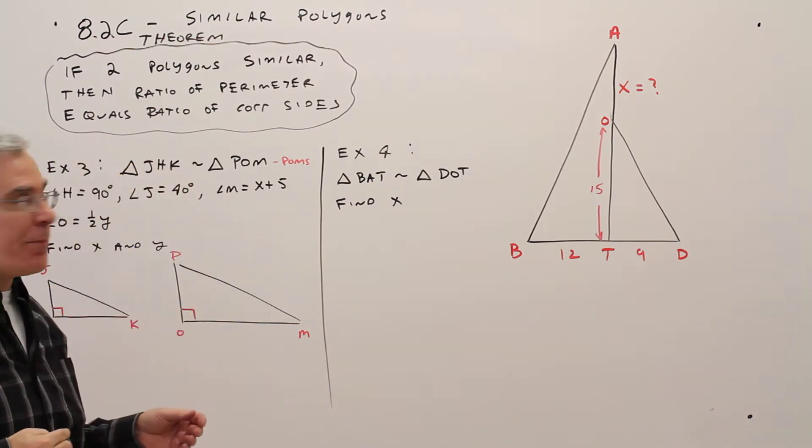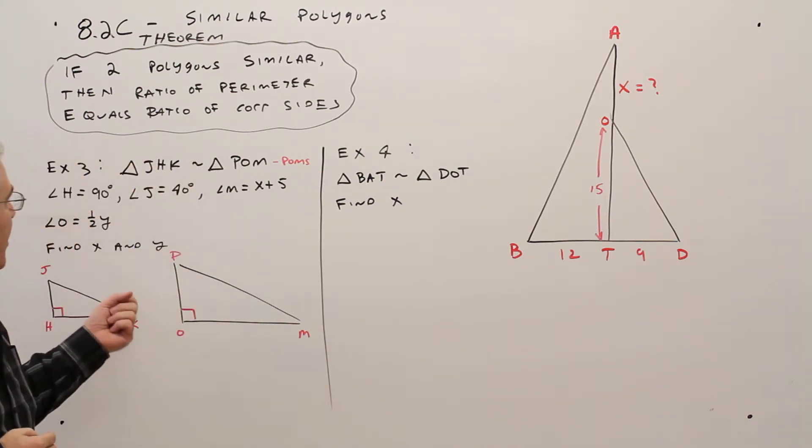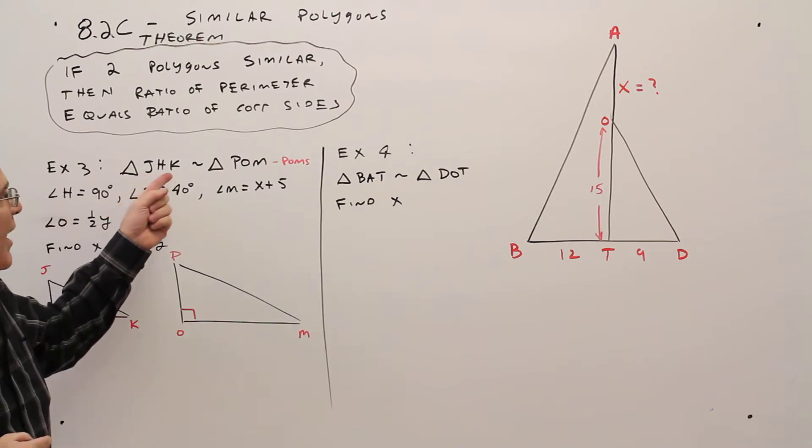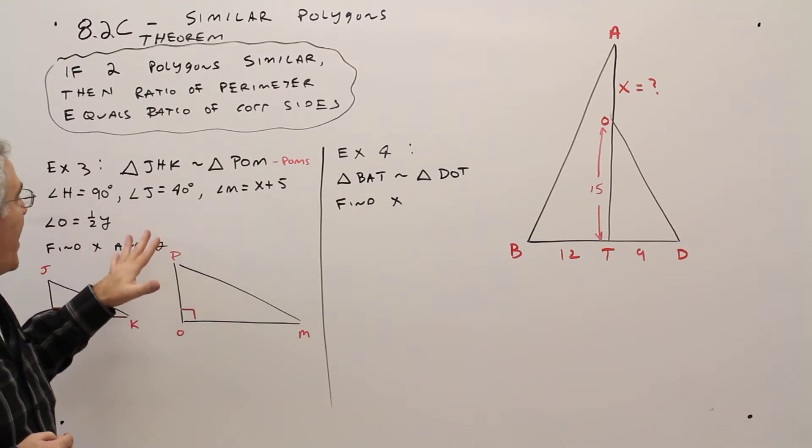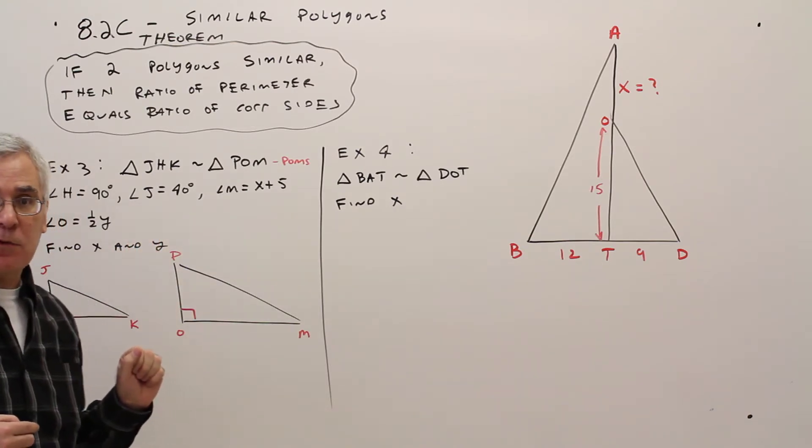Alright, here's two new examples. Example 3. I've got triangle JHK similar to triangle POM, and I'm given this information, and I want to find X and Y.